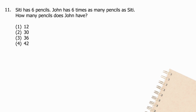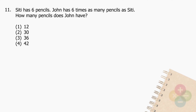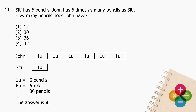Question 11: City has 6 pencils. John has 6 times as many pencils as City. How many pencils does John have? 1 unit equals 6 pencils. 6 units: multiply 6 by 6 and the product is 36 pencils. The answer is 3.